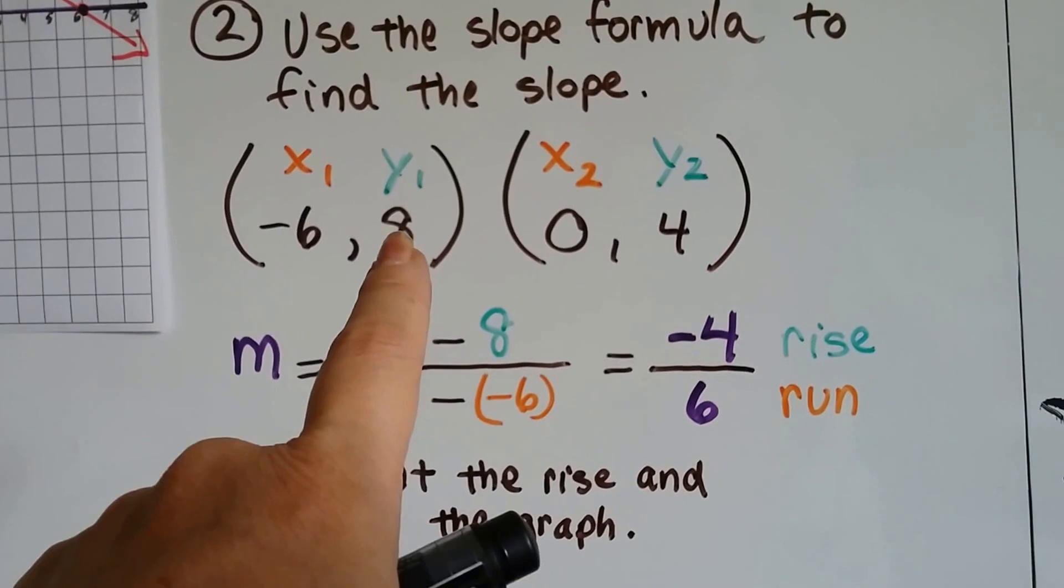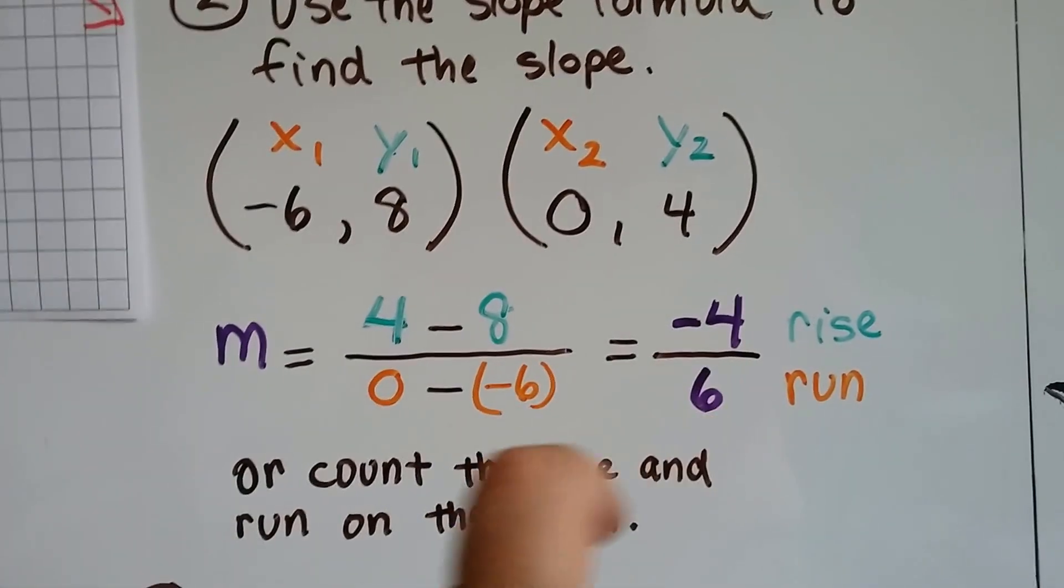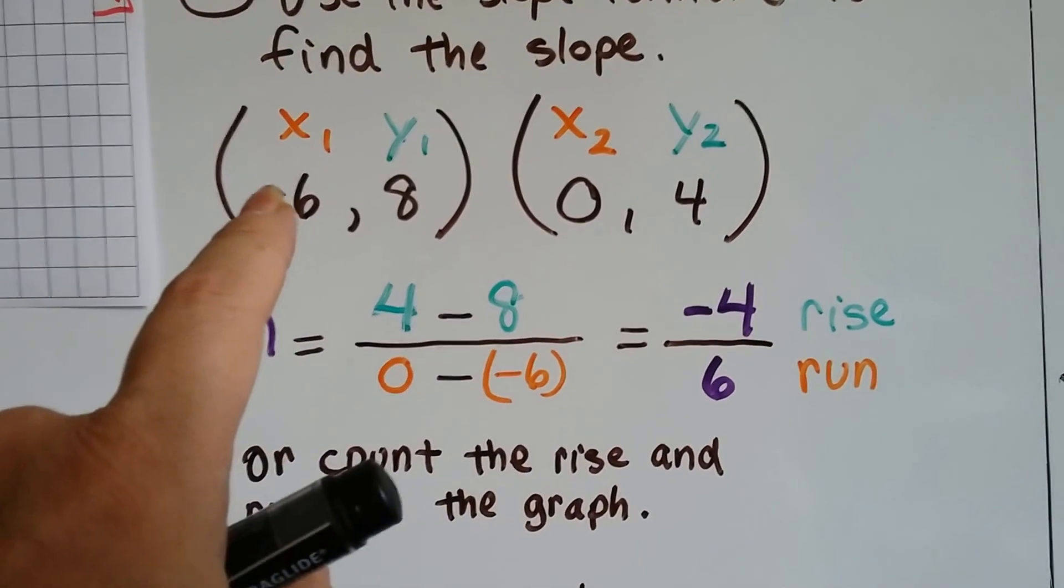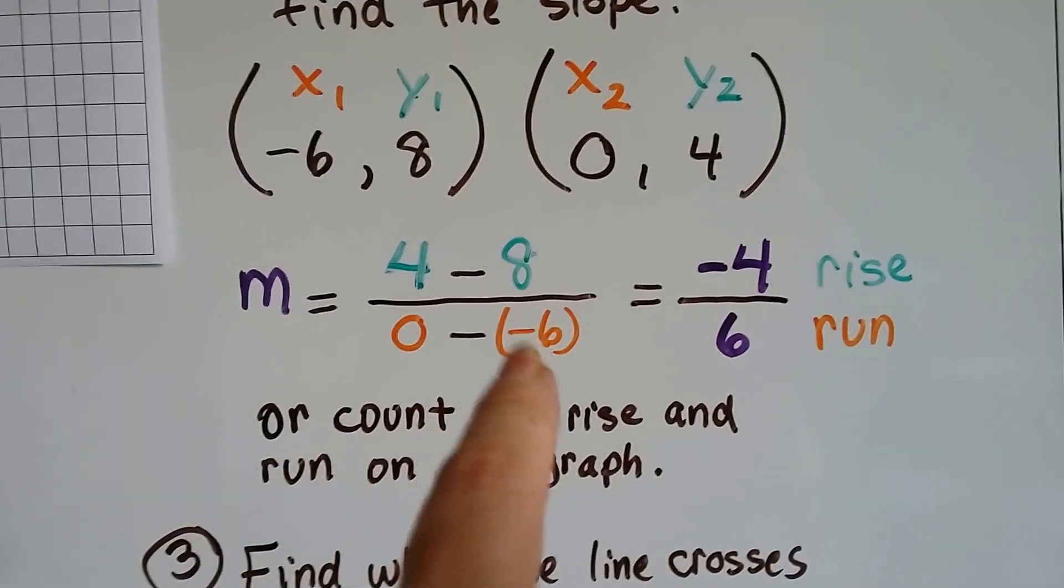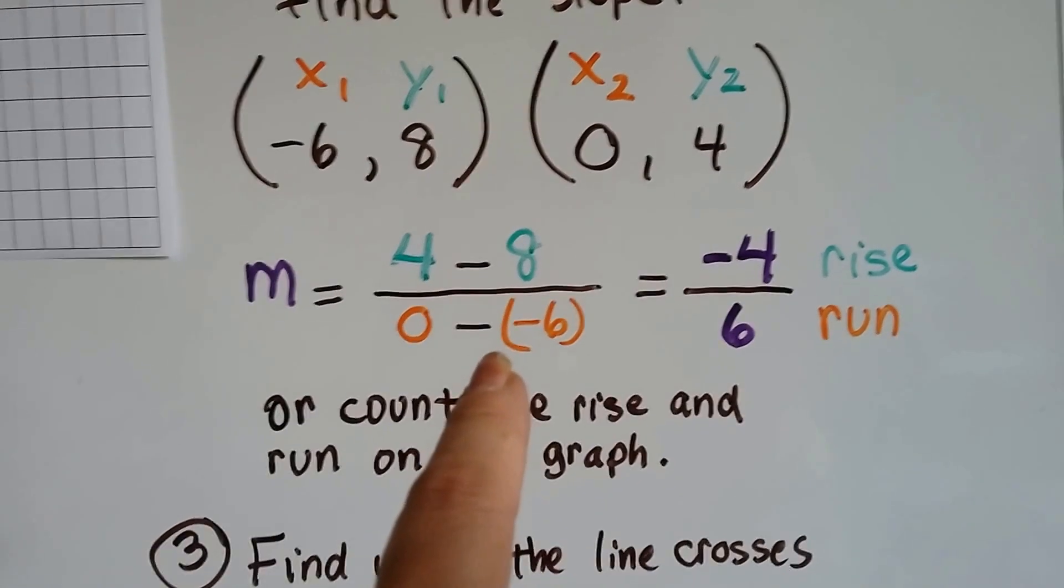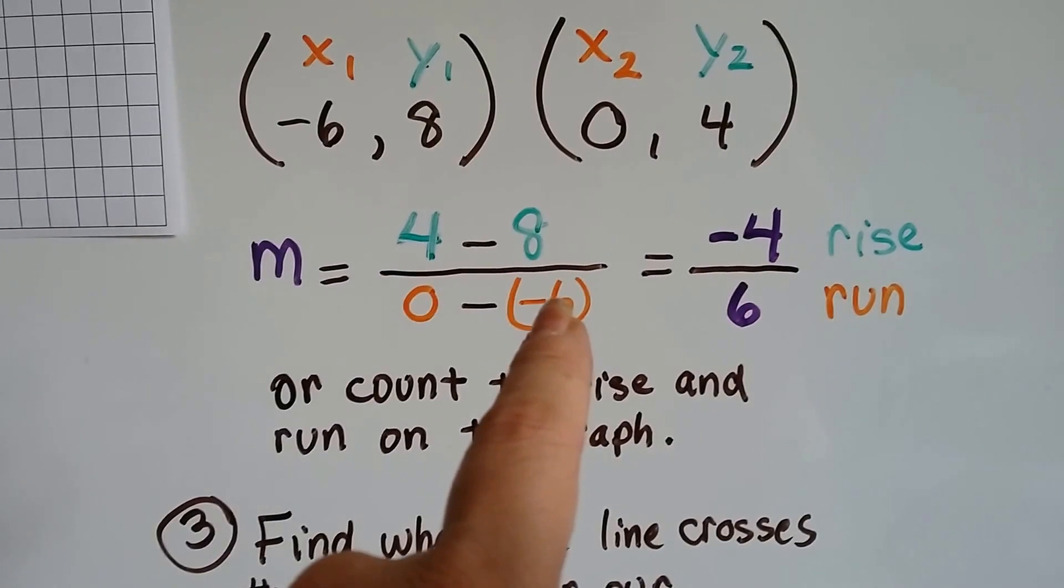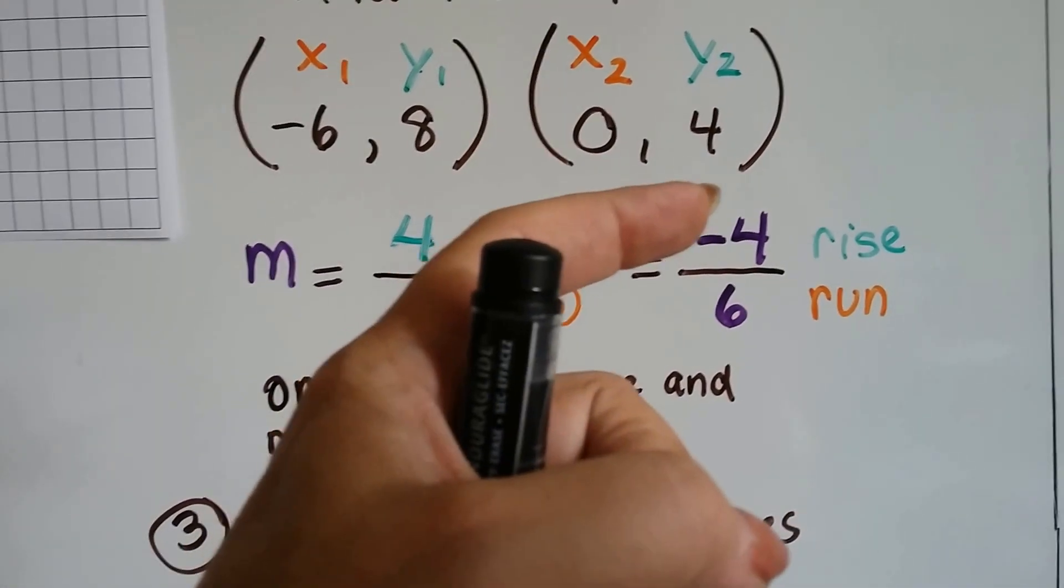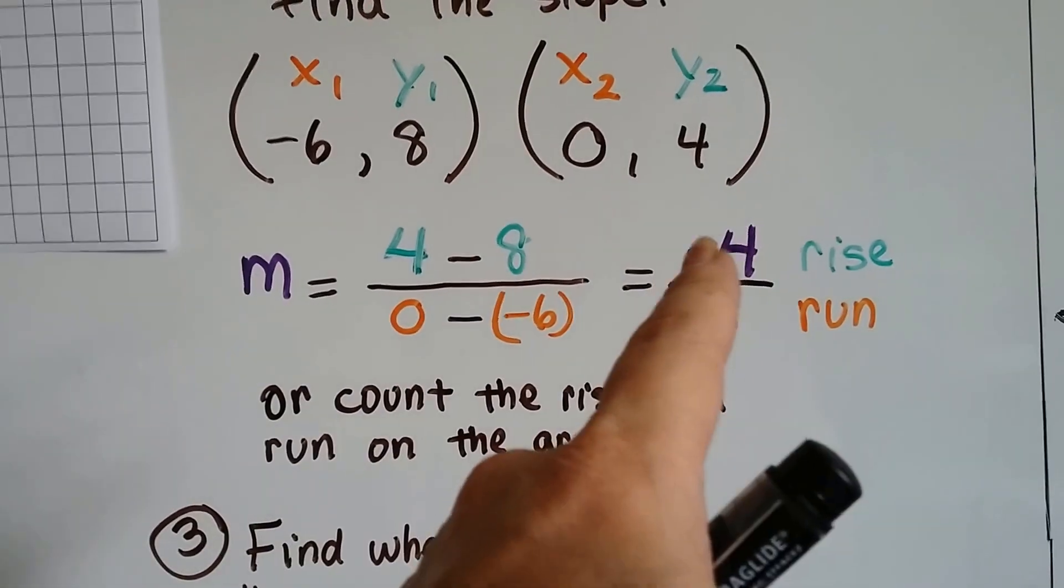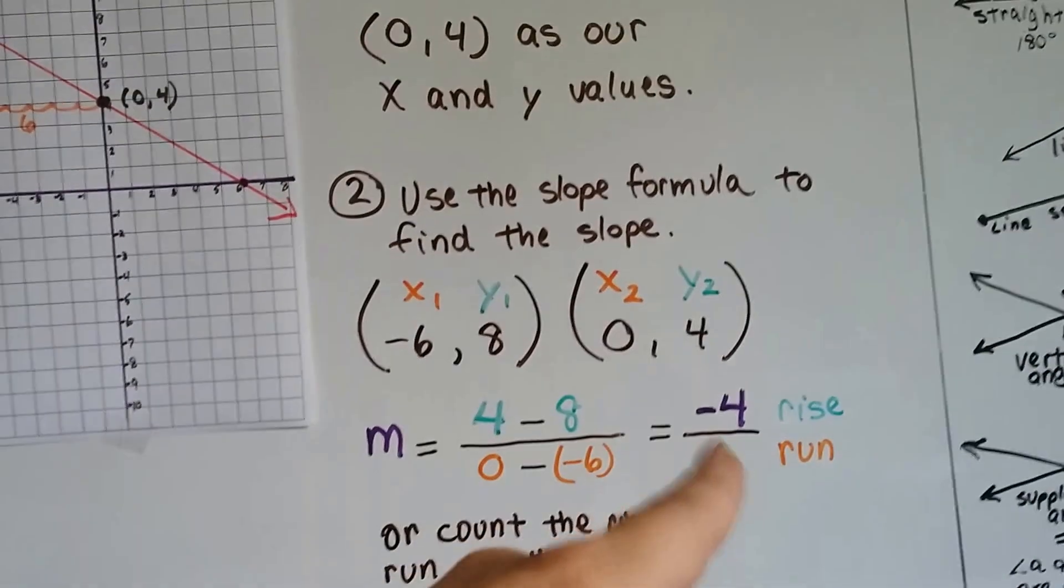We do our slope formula. We have 4 take away 8. That's going to be negative 4. And then we have 0 take away 6, negative 6. Well, if you have 0 and subtract a negative 6, remember we add the opposite when we subtract negative integers. So, we're really adding a 0 plus 6. That's going to give us a 6. So, our rise and run is negative 4 over 6. There's our negative for our falling line. See? We knew there was going to be a negative.